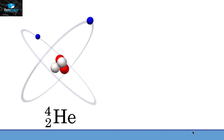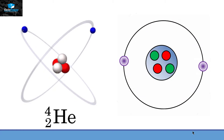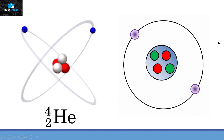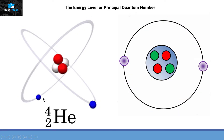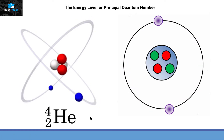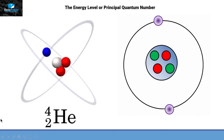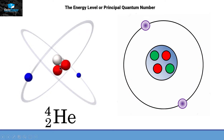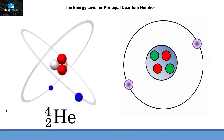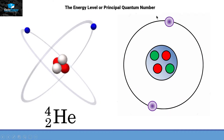We can see that there are two electrons revolving around the nucleus in the Helium atom. In a simplified picture, these two electrons revolve around the nucleus at a specific distance depending on the energy level or principal quantum number. Within the same shell, the two electrons revolve in opposite directions. This is a more appropriate picture of how electrons move, and we can see there is only one shell in that Helium atom.